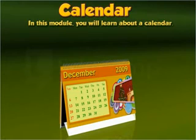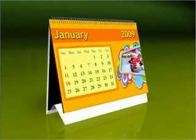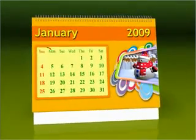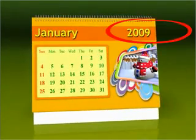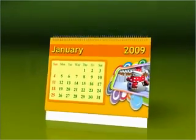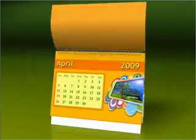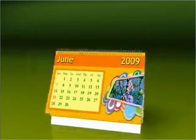In this module, you'll learn about a calendar. A calendar is a table showing days, weeks, and months in a specific year. It is used to keep track of important dates, festivals, holidays, and seasons.